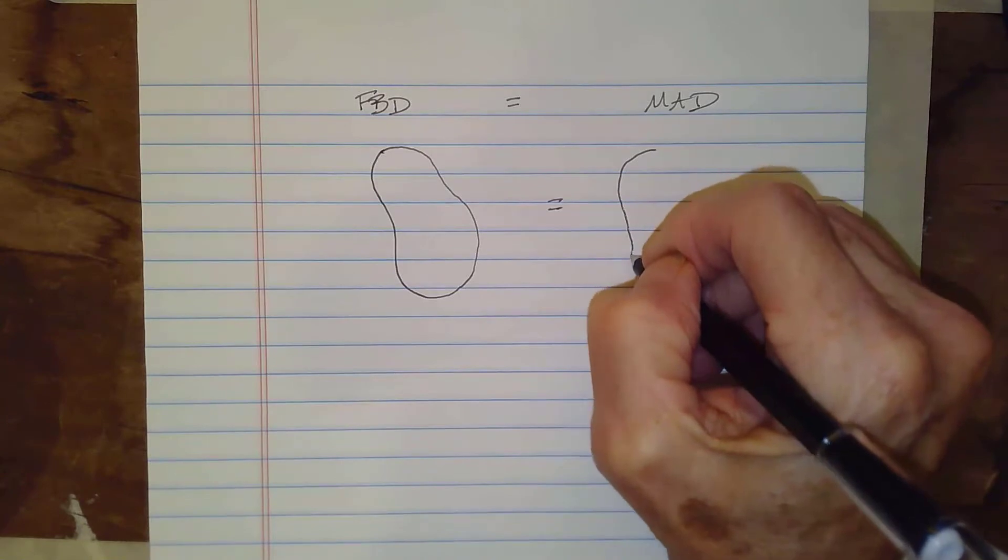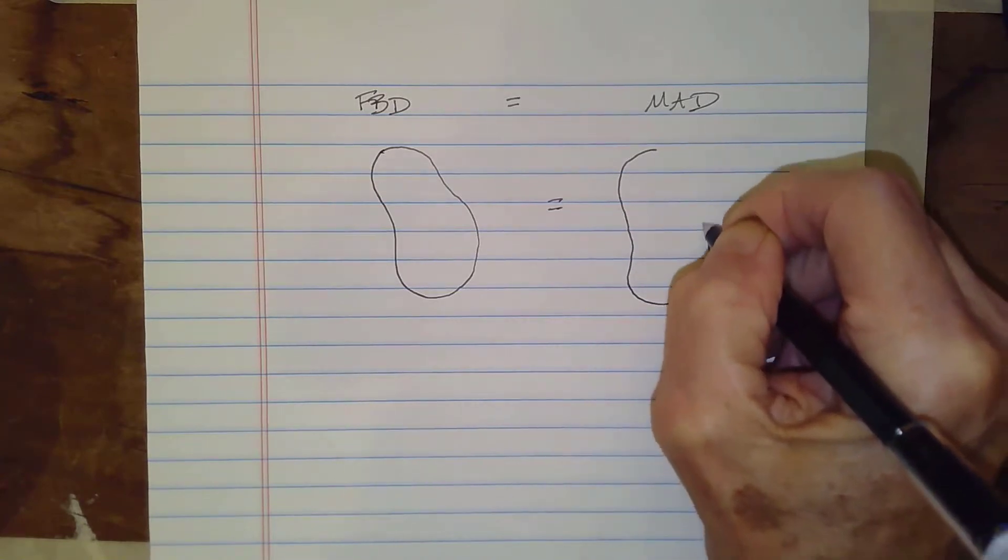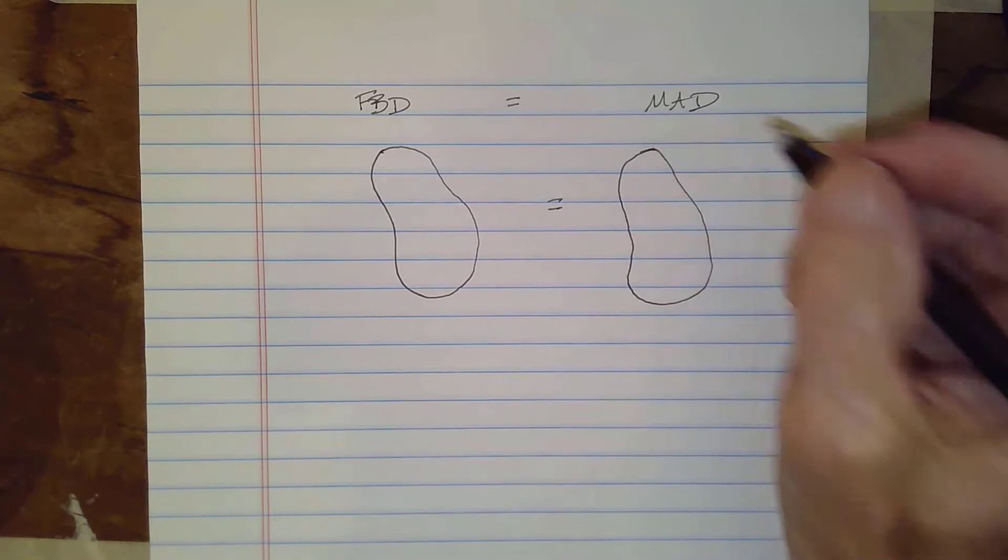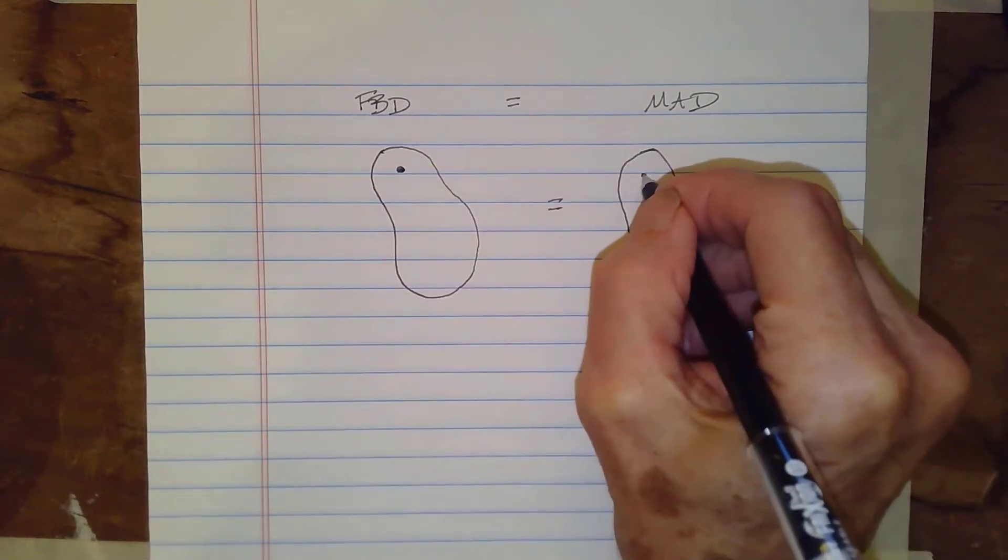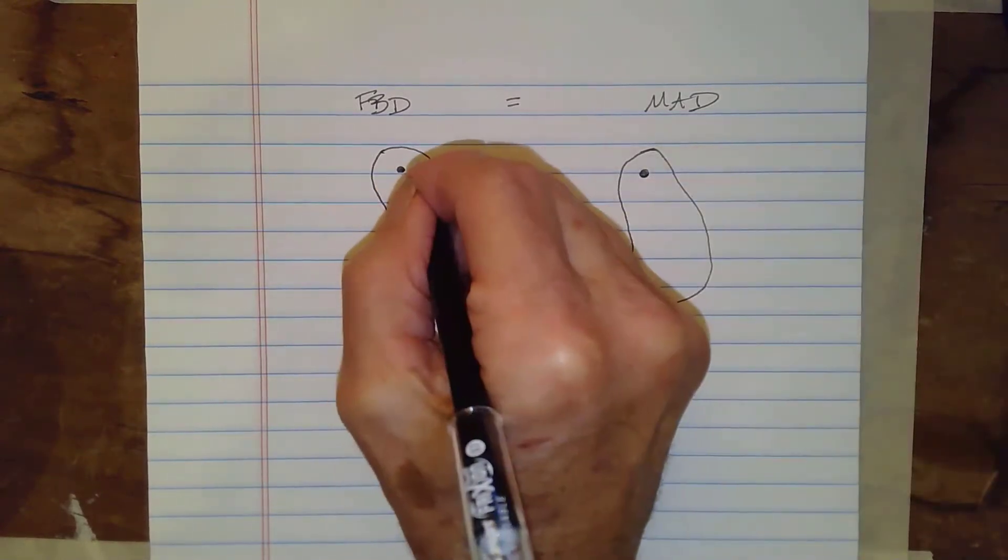I'm not precise enough to make it exactly the same, but what's implied is that these are the same. And we're going to pivot this shape about a point. And I'll call this O.